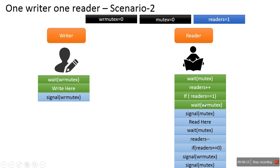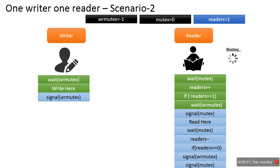Next, the reader checks whether there is only one reader — that is, whether this is the first reader. The variable currently holds 1, so this condition is satisfied and the next instruction executes: wait(wr_mutex). This decreases the current value, making it -1. Since the semaphore value is less than 0, this reader has to start waiting.